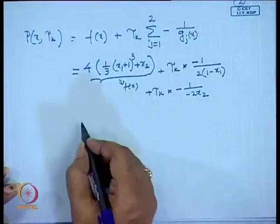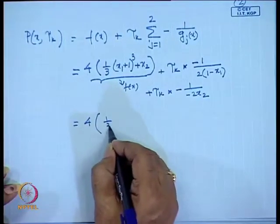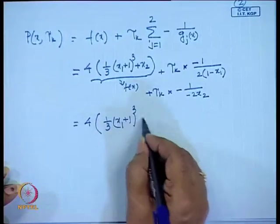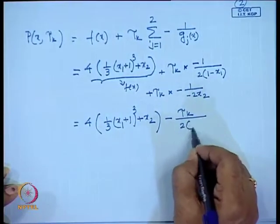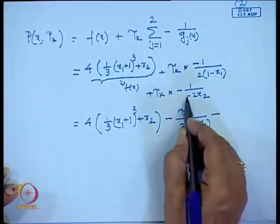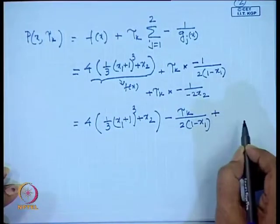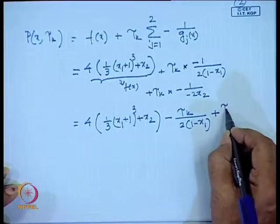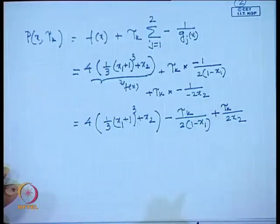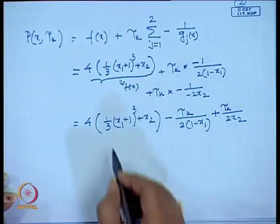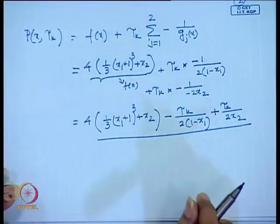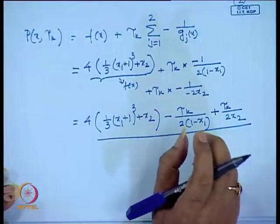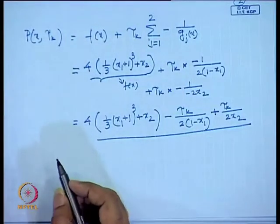Ultimately, the penalty function becomes: (4/3)(x1 + 1)^3 + x2 - tau_k/(2(1 - x1)) + tau_k/(2x2). Here tau_k is the penalty coefficient for the inequality constraints. Note that if there are equality constraints, we cannot directly apply this method at this point.